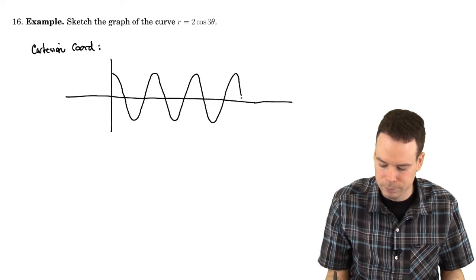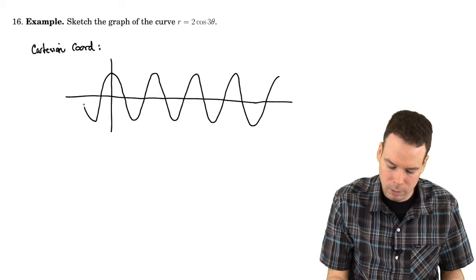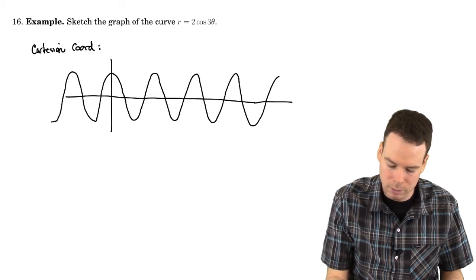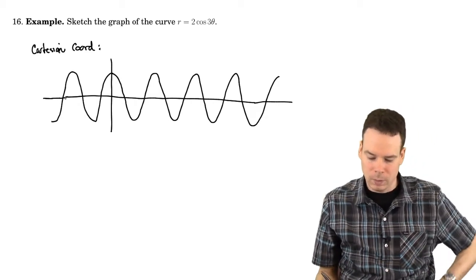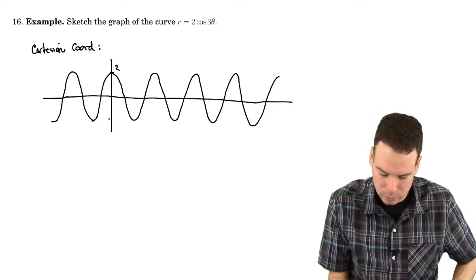Looks something like this and so on. And now I'll put in all this scaling information. So its amplitude is 2. So it goes up to 2, down to negative 2.